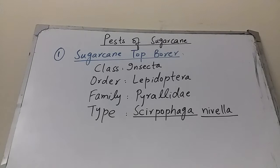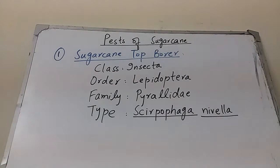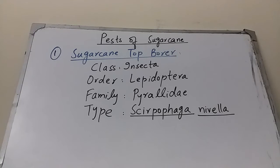The major insect pests of sugarcane are described here along with their systematic position. First is the Sugarcane Top Borer. Its systematic position: Class Insecta, Order Lepidoptera, Family Pyralidae, and the scientific name is Scirpophaga nivella. It mainly infests the top portion of the stem, which is why it is called the top borer. It is basically a moth.